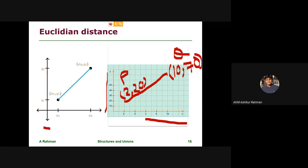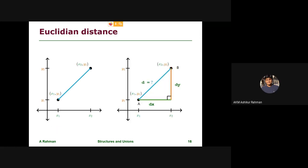This is the generic form of the point. This is the X coordinate and this is the Y coordinate. We have two points: one is defined by X1, Y1 and the other is defined by X2, Y2. Given this situation, the shortest straight line distance between them is basically the Euclidean distance.